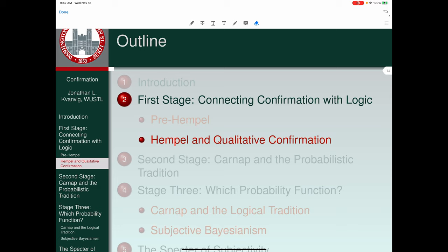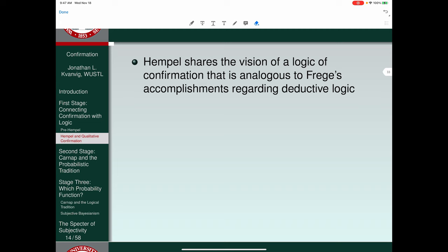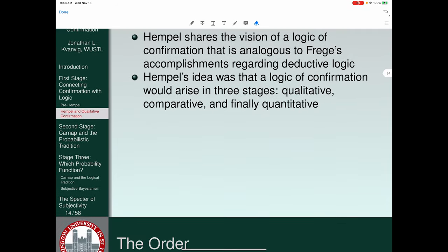So the A.J. Ayer account is completely undermined by this requirement that it be a three-place relation, not a two-place relation. In any case, that's the initial background context for the first stage, leading up to the work of Carl Hempel. That background context was, we want a logical and objective notion of probability confirmation, and we get that by connecting the notion of confirmation to the notion of probability. So how does Hempel fit into this? Hempel shares the vision of a logic of confirmation that's analogous to Frege's accomplishments regarding deductive logic.